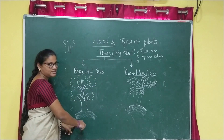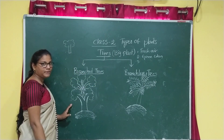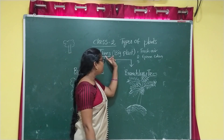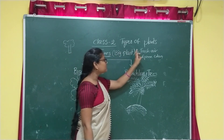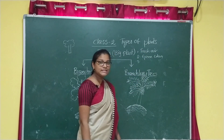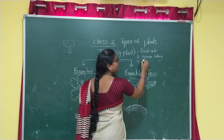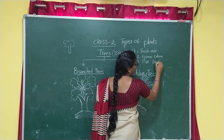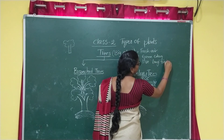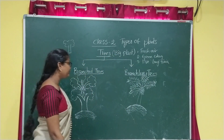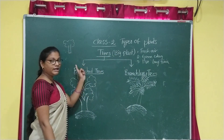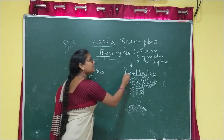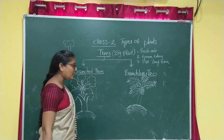For example, look at this plant — it is very big, so it is known as a tree. Big plants give fresh air. They are in green colour and they live for a long time.